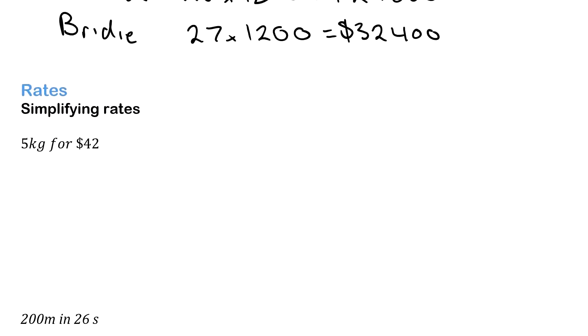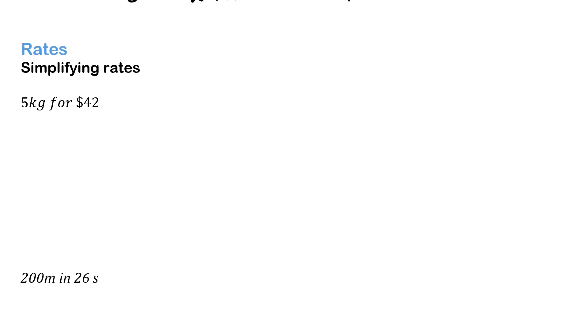So we're going to look at rates now. We're looking at simplifying rates to begin with. I want this in terms of dollars per kilogram. So all I need to do there is, this is essentially telling you what to do. It's telling us that we need to go all our dollars divided by the kilograms. So we're going to have $42 divided by 5 kilograms, and that gets us $8.40 per kilogram.